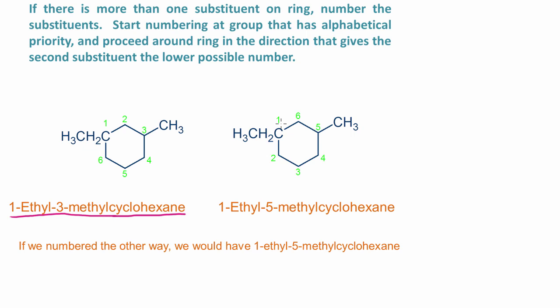If I would have numbered the opposite way, starting here again with the ethyl group, this is carbon one, two, three, four, five, then I have an ethyl group on carbon one again, but my methyl group is on carbon five. This would not be the correct name. 1-ethyl-5-methylcyclohexane is wrong. The name is 1-ethyl-3-methylcyclohexane. You want that second substituent to have the lowest possible number.